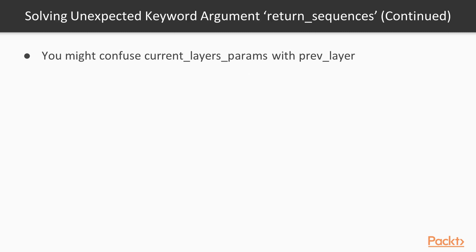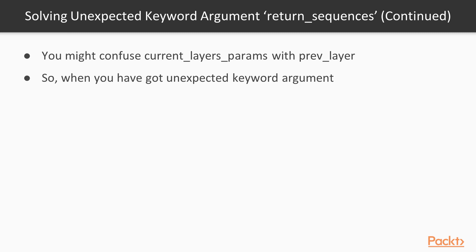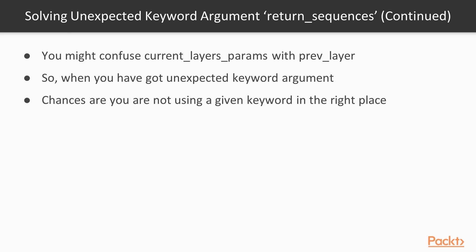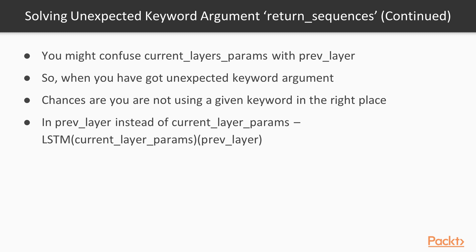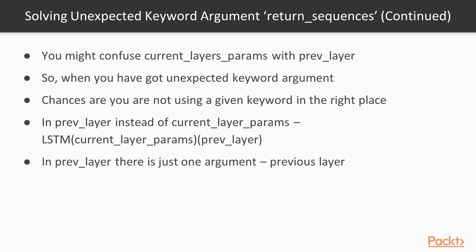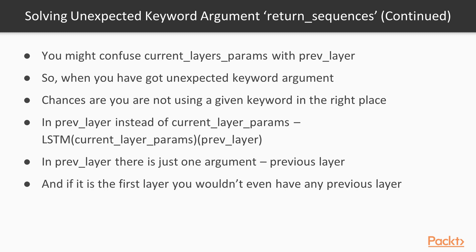The big confusion here is that you might mix up those two sets of parentheses. When you get an unexpected keyword argument — specifically for return_sequences — chances are you're not using that keyword argument in the right place. In the first parentheses, you provide the actual parameters for the current layer. In the second parentheses, you're only providing the previous layer. That's it — there are no named arguments there, just one argument: the previous layer you've just initialized.